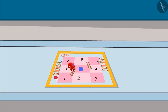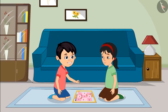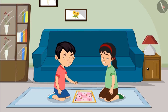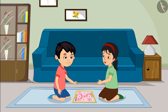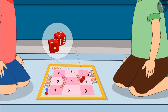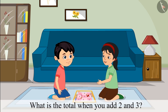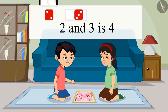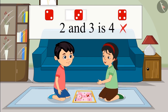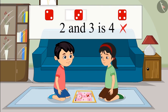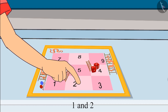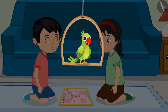May I roll the dice first? Yeah, sure — then add the numbers on both dice correctly and move your piece forward. Chotu rolls both dice. Two is written on one dice and three on the other. Chotu, what is the total when you add two and three? Chotu answers: four. This is incorrect, Chotu — think again and explain how you counted. One and two — that's the number on the first dice — then two, three, and four.